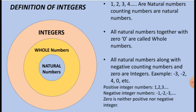1, 2, 3, 4 — all are natural numbers, and all natural numbers together with 0 are called whole numbers. All natural numbers along with negative counting numbers and 0 are integers. Examples are minus 3, minus 2, 4, 0, etc. These are all called integers.